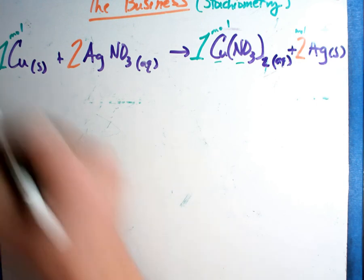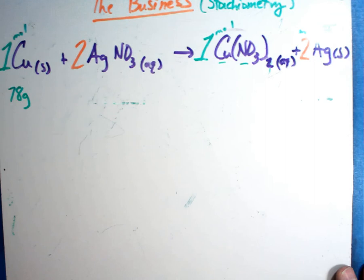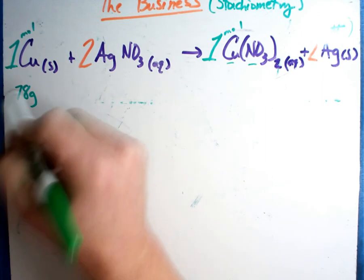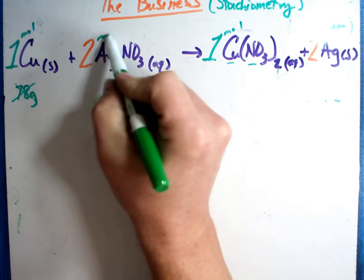So let's say we had, in this case, 78 grams of copper. Well the very first thing you need to know in order to work this problem is I put a light X through that, you can't use that. Why? Because this is in moles, this is in moles, this is moles, this is moles.